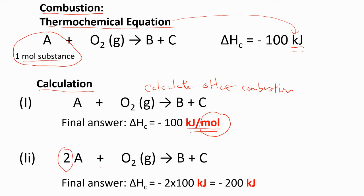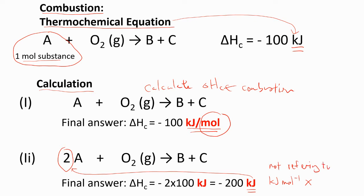However, if the given equation involves two moles instead of one mole, then our answer is only kilojoule, because it is not referring to one mole. We cannot write kilojoule per mole when it is not referring to one mole of substance. We can use kilojoule per mole only for specific enthalpy referring to one mole.